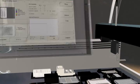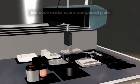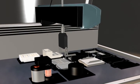To start, the robotic gripper arm picks up the compound plate for barcode scanning. The plate contents are confirmed and recorded to the database.